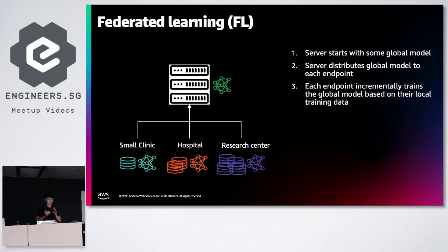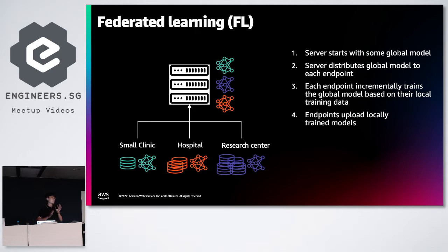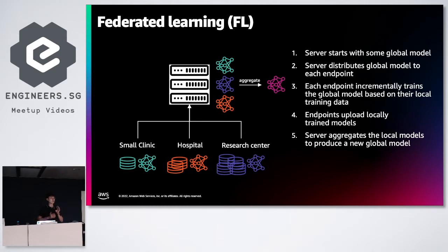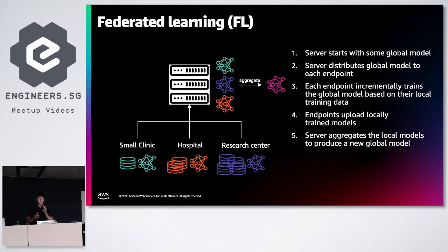Each endpoint will incrementally train the global model based on their local training data. The models sent to the small clinic, hospital, and research center will be adapted to data in their respective areas. Afterwards, we upload not the data but the model weights and other artifacts to the centralized model — your company — which aggregates them by combining the weights. There's a lot of research on how best to aggregate models. This gives your model a chance to have seen all the different types of data: the gigabytes in clinics, the terabytes in hospitals, the petabytes everywhere. It's possible that a small clinic in another country — say with dermatology data for people with different skin colors — will help your model adapt and generalize better to these diverse data sets.